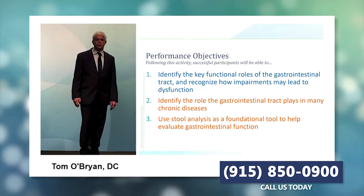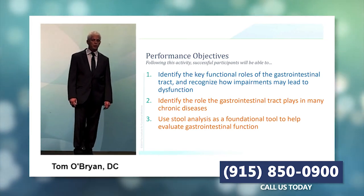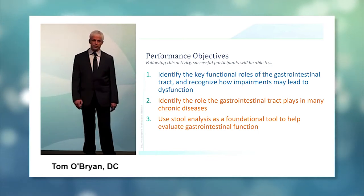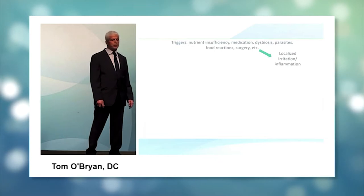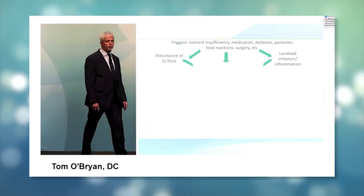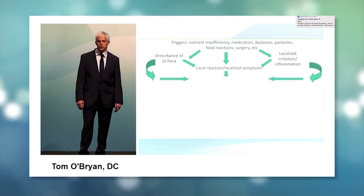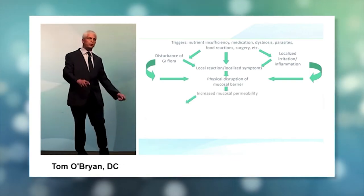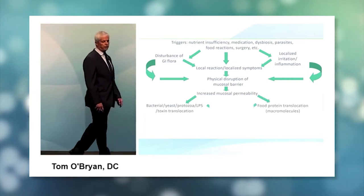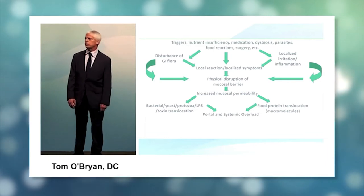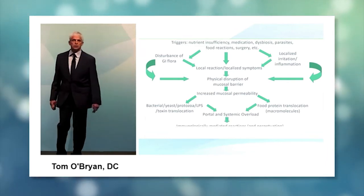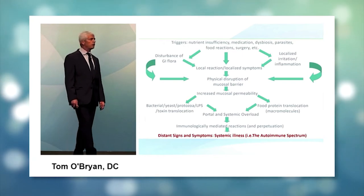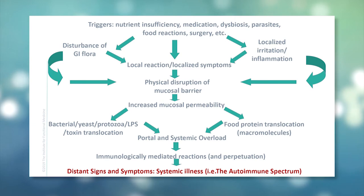There are three performance objectives of this talk. The first one is identify the key functional roles of the GI tract and recognize how impairments may lead to dysfunction. Nutrient insufficiencies, medications, dysbiosis, parasites, food reactions, and surgery disturb the microbiota, causing localized irritation, inflammation, disruption of the mucosal barrier, creating immune inflammatory response and immune mediated reactions and distant signs and symptoms we call the autoimmune spectrum.